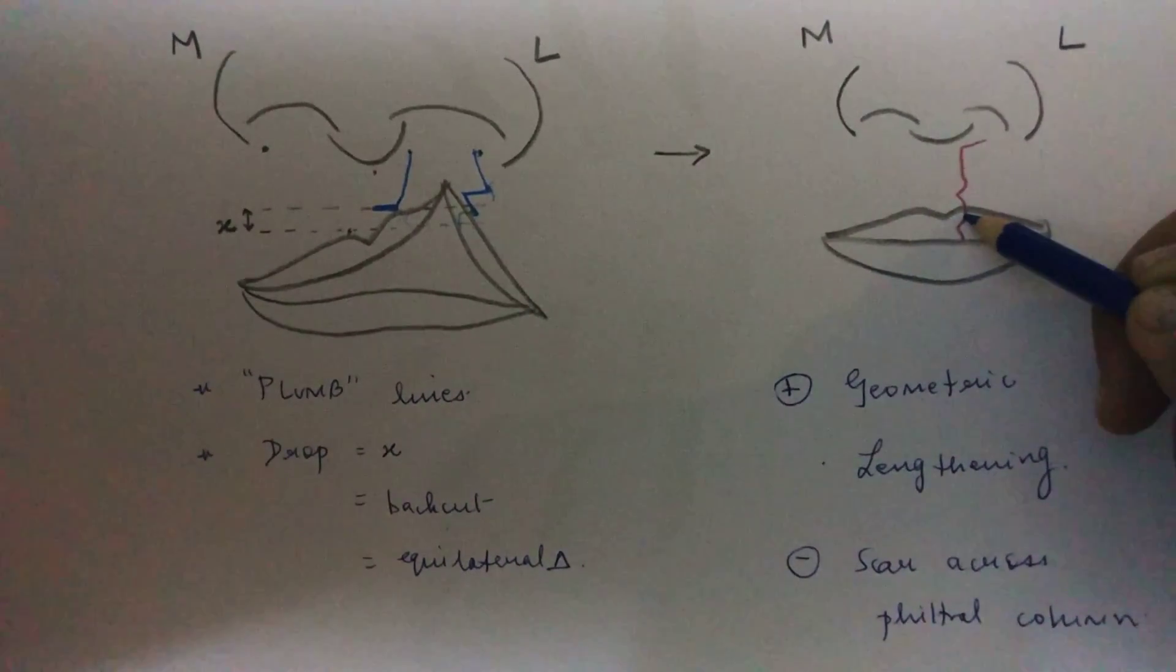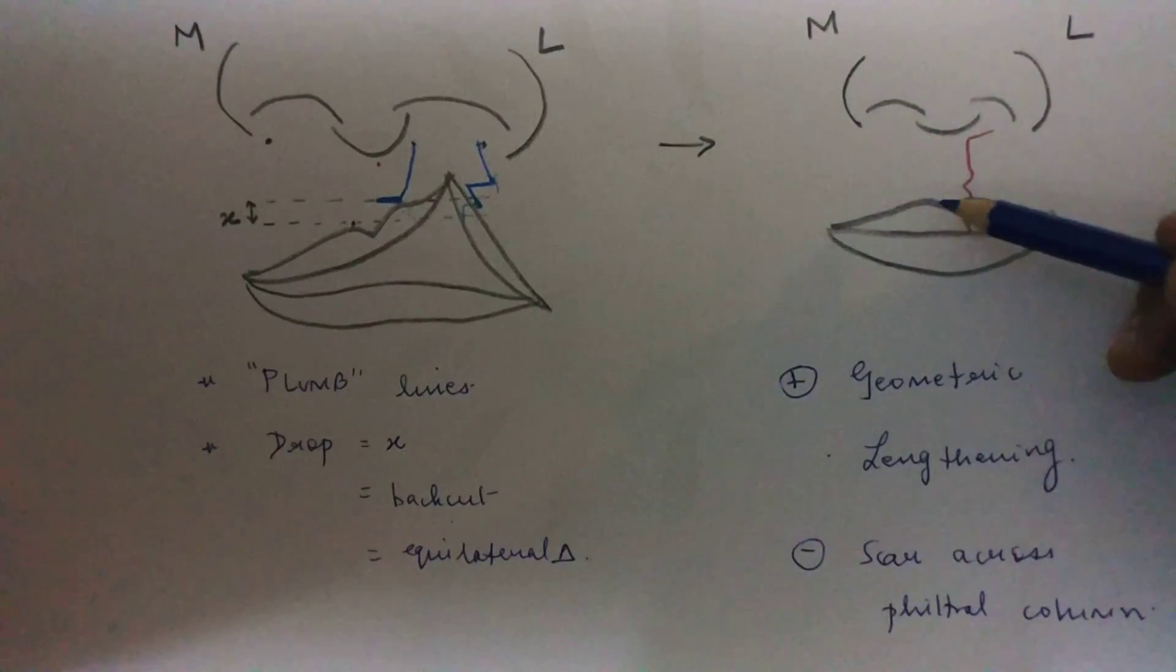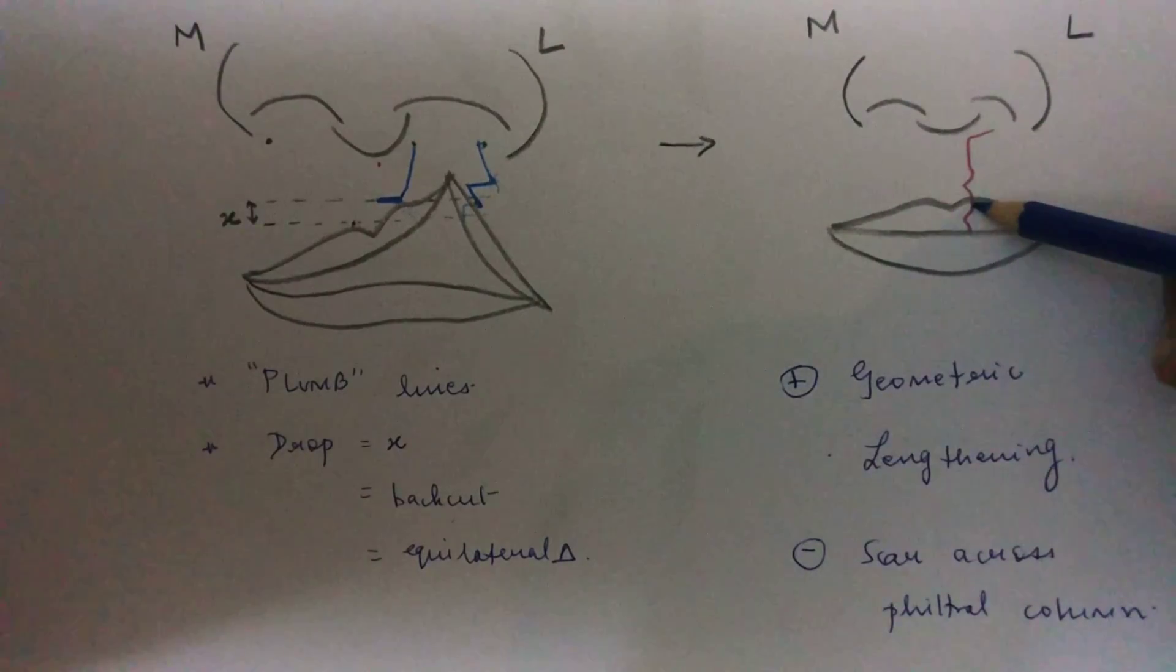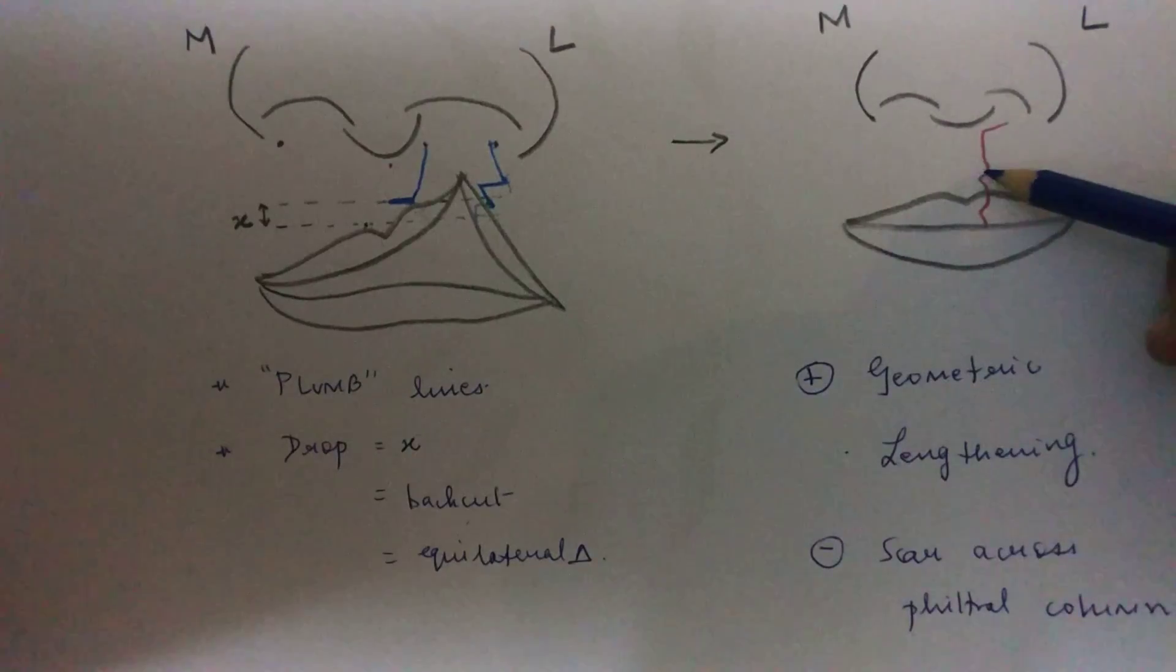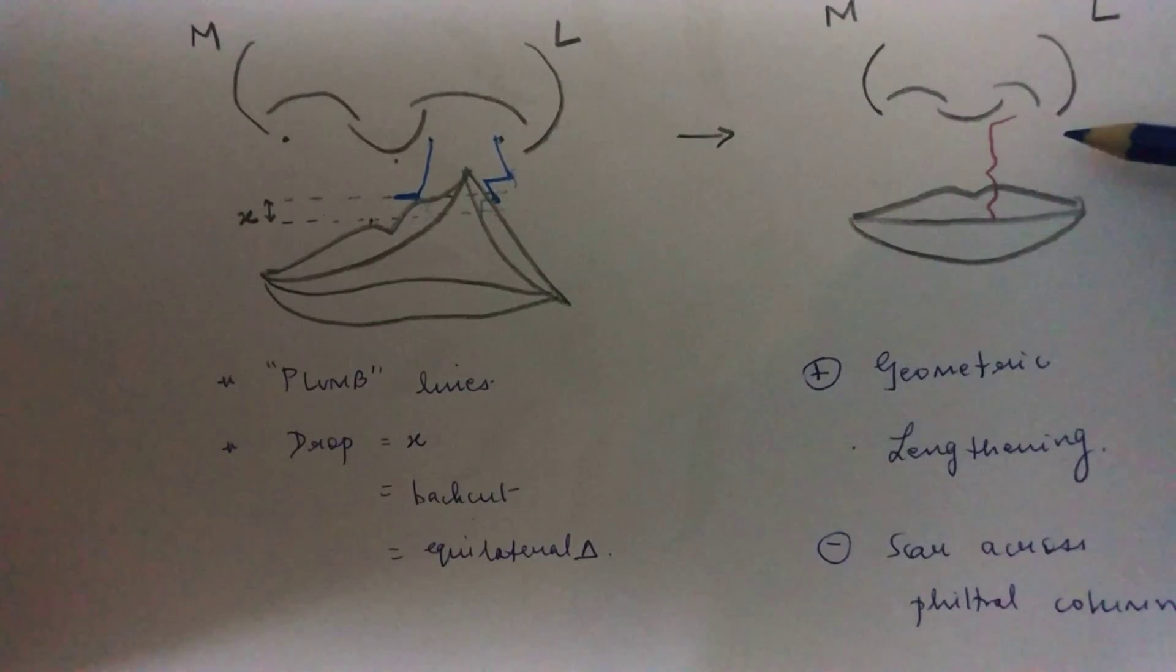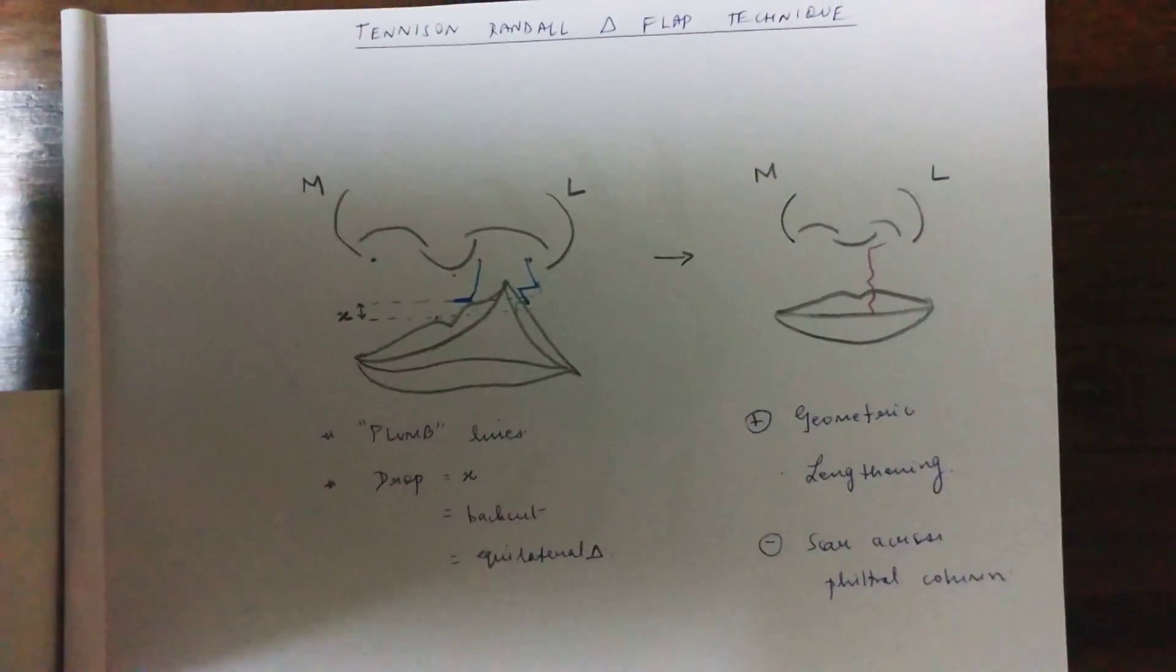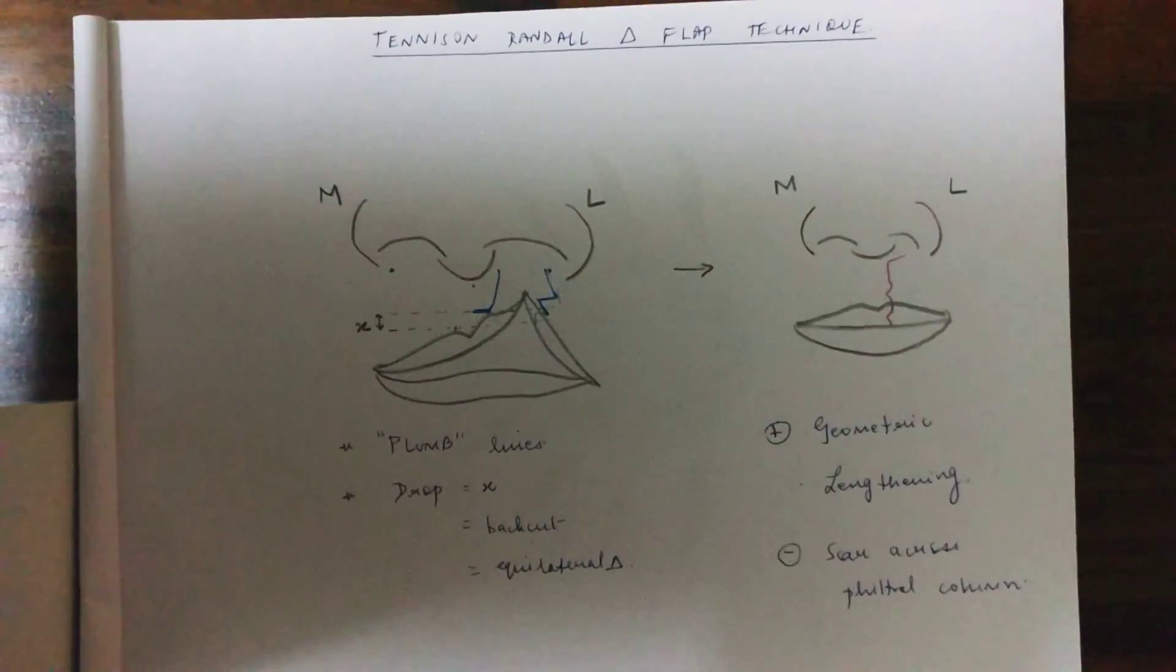The advantage of this technique is that it is a very geometrical method, so the planning and the measurements are done beforehand and it gives a better lengthening effect and prevents shortening of the scar. But the disadvantage is that it cuts a scar across the filtral column. From this technique also stems the triple wedge technique, which I will show in the next video. There is another technique, which is Professor C.P. Saani's technique, which also has similar triangular flap measurements.